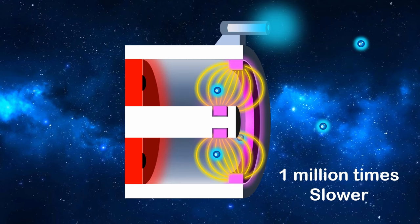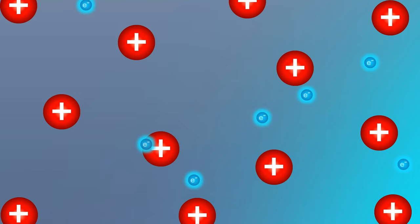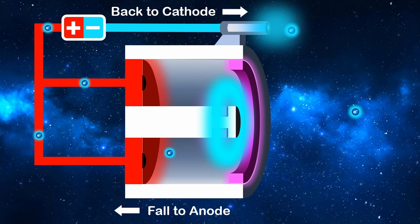The resulting electron tornado greatly increases the number of collisions with xenon atoms, resulting in many more ions and much more thrust. The electrons then lose momentum during collisions and fall back to the anode, only to flow back to the hollow cathode and complete the circuit.